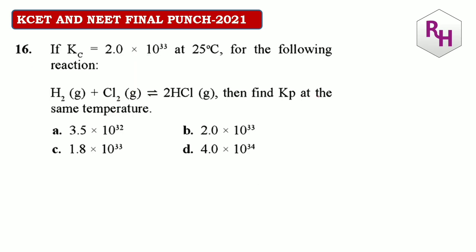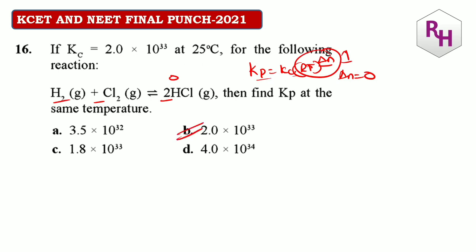16th question: if Kc is given, find Kp. Kp = Kc×(RT)^Δn. Here Δn = 2−2 = 0, so Kp = Kc. Kp = Kc×(2.0)^0 = Kc. The answer is B.